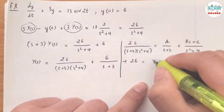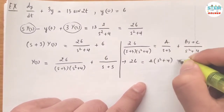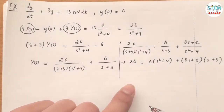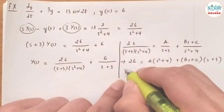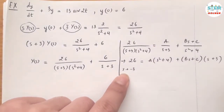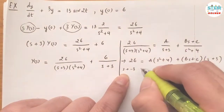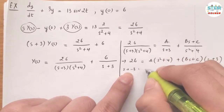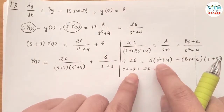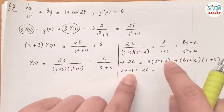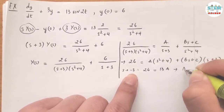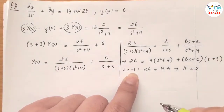Multiplying both sides by the common denominator, the left side gives 26, and the right side gives A times (s squared plus 4) plus (Bs plus C) times (s plus 3). Taking the limit as s approaches negative 3 eliminates the Bs plus C term. The left side gives 26, and the right side gives A times (9 plus 4), which is 13A. So A equals 2.